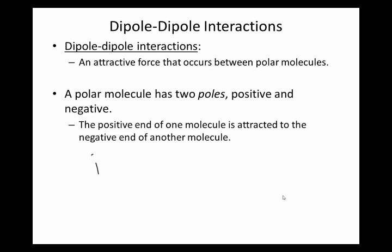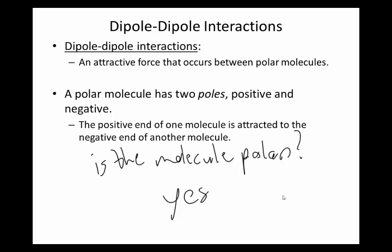The test to determine if something has dipole-dipole interactions is very simple, it's very binary: is the molecule polar? Yes or no, and that is your answer. Polar molecules have dipole-dipole interactions. Non-polar molecules don't.